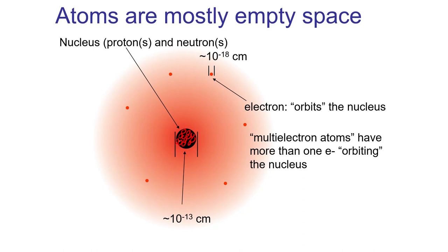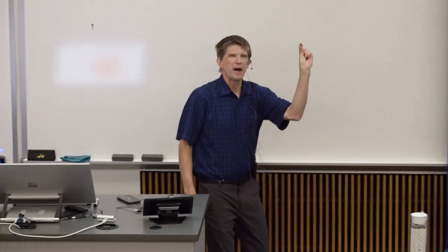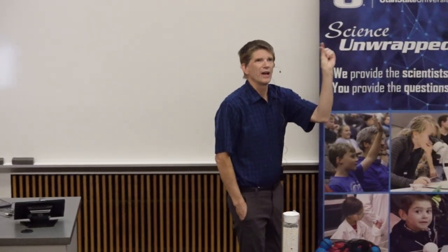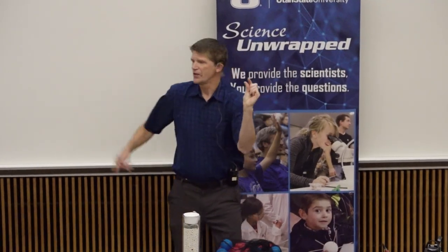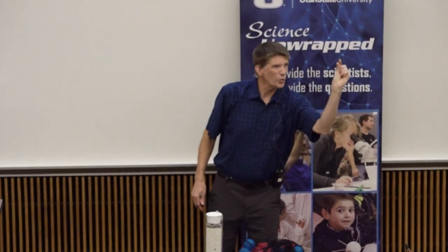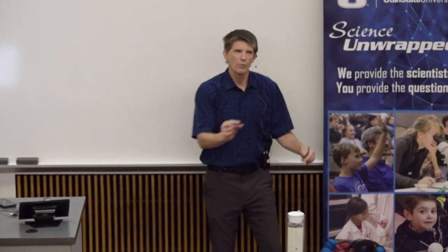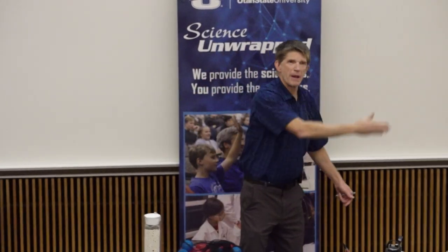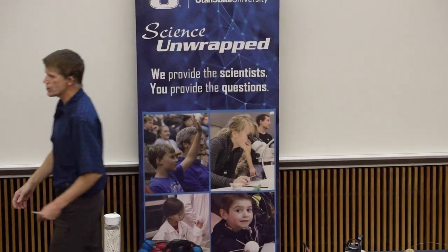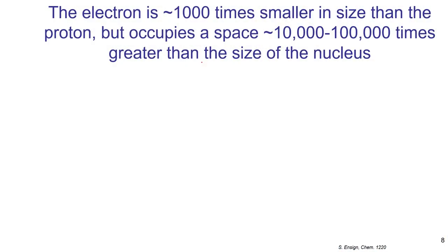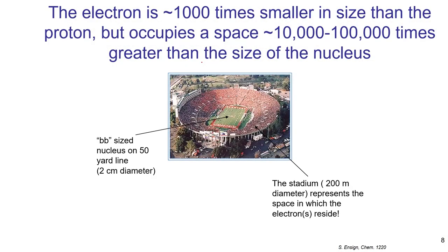These numbers here, 10 to the minus 13 centimeters, is about the diameter for a nucleus of an atom. This is not drawn to scale, by the way. It's an incredibly small number. But even smaller is the diameter of this electron, 10 to the minus 18 centimeters. So to give you something as an analogy that can help you to understand the relative scale of an atom, with respect to the size of the nucleus and the space in which the electron or electrons are found, I want you to imagine that you're standing in the Rose Bowl. Okay?